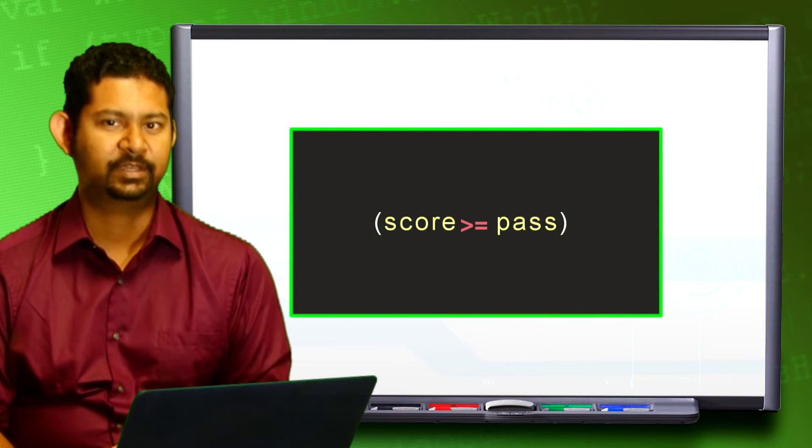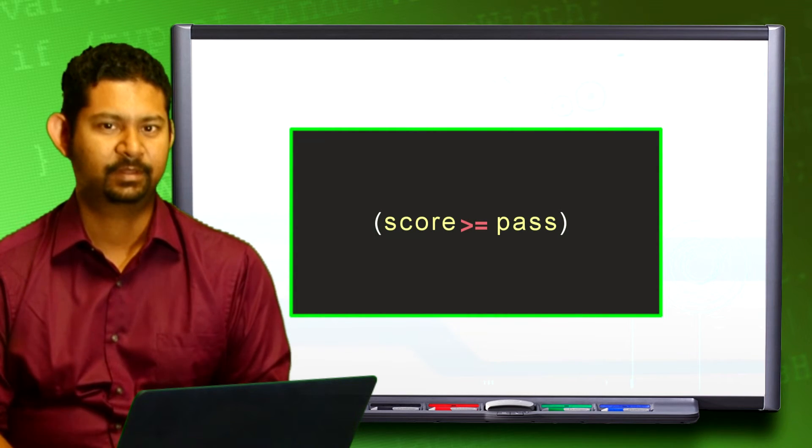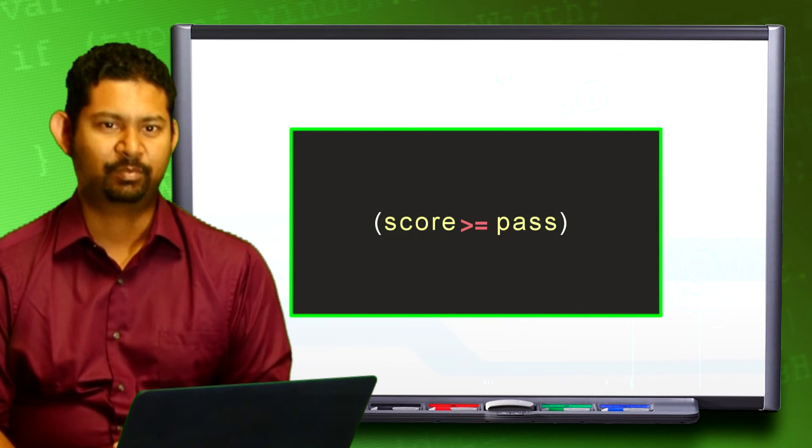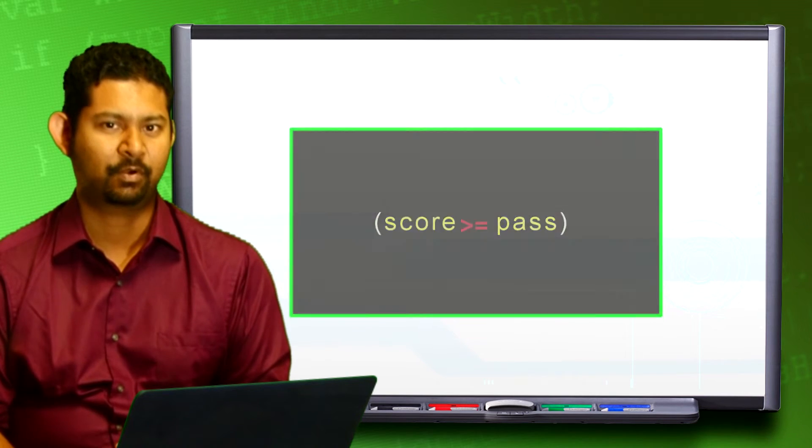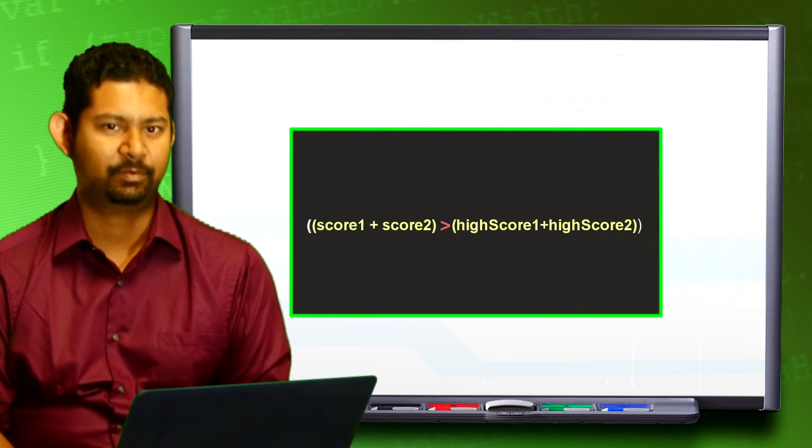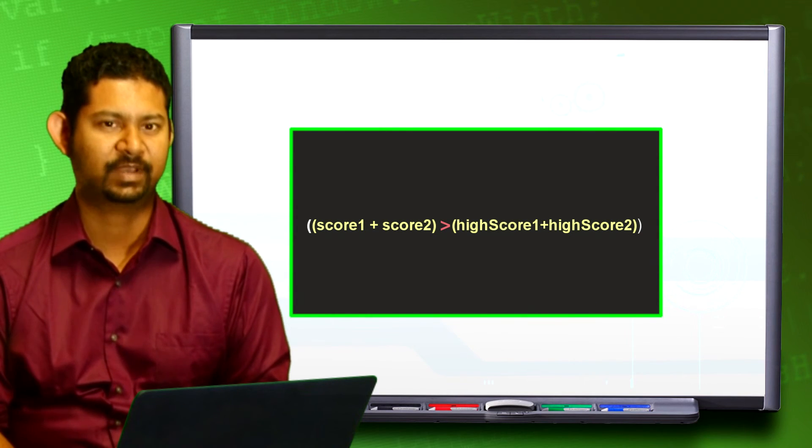When evaluating a condition, it will usually consist of one comparison operator, like the ones we mentioned, as well as two operands. The operands are placed on each side of the operator. These can be values or variables. These operands can also be expressions, as expressions evaluate down to a single value.